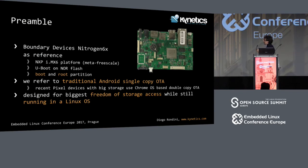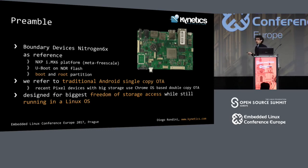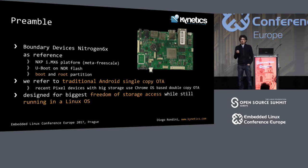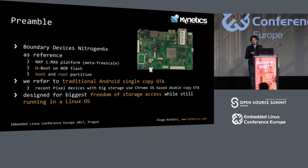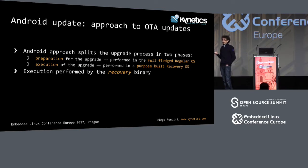Basically, Android smartphones that have more storage can use double-copy. What we wanted to do was to have the biggest freedom to access storage, so we wanted to be able to write almost anything on our device, not just update the root filesystem. And of course, we wanted to run in Linux, because it has additional capabilities with respect to, say, U-boot.